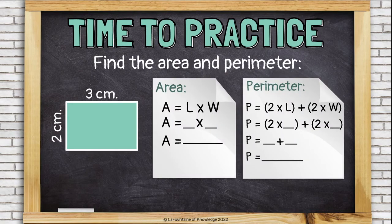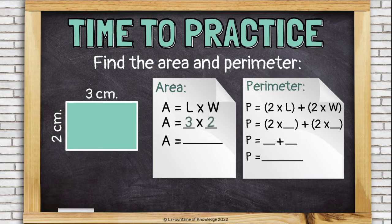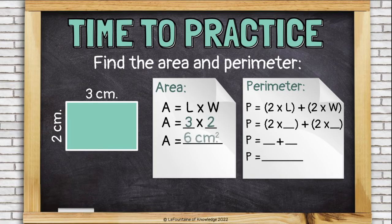Let's try a few more practice problems. This time we have a rectangle that's 3 centimeters long and 2 centimeters wide. First, let's find the area. So remember, the formula for area is A equals L times W. Area equals length times width. Let's plug in our numbers. The length is 3 and the width is 2. Now we just multiply them together. 3 times 2 is 6. The area is 6 square centimeters or 6 centimeters squared.